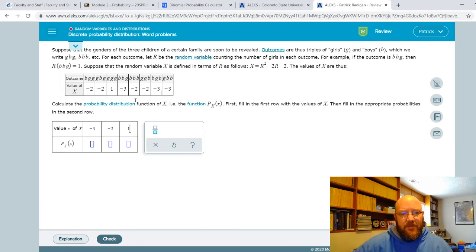So negative three happens one, two, three times. So that's three out of eight. Negative two happens one, two, three, four times. So that's one half or four out of eight. And then positive one only happens once. And so we've got one out of eight. And they really are that easy.